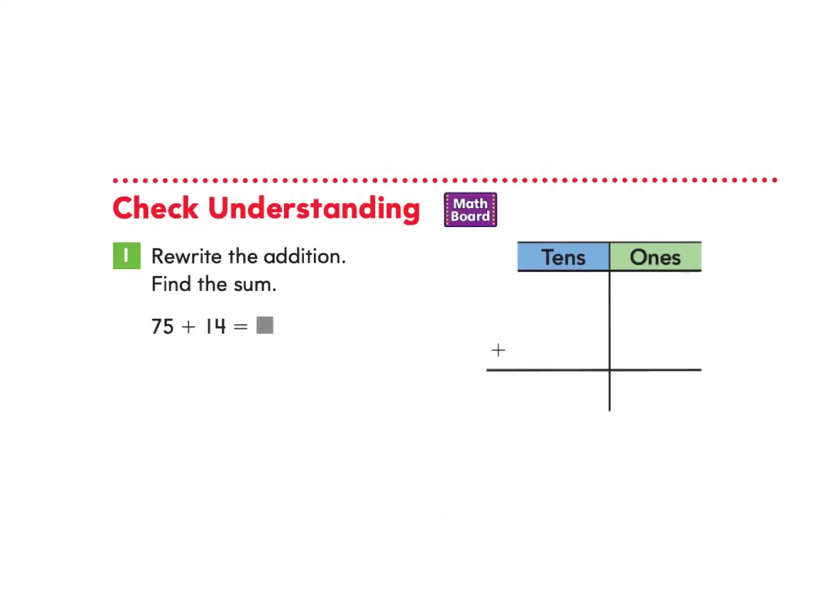Let's check for understanding. This question asks us to rewrite the addition and find the sum. 75 plus 14 equals what? So our first step is to rewrite this addition problem. We're going to write 75 plus 14. Now we're going to find the sum. The first step is to add the ones column. We always add the ones column first. So five plus four makes nine. And then we add the tens column. Seven plus one makes eight. So our answer is 89.